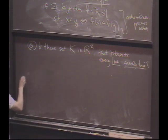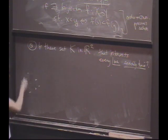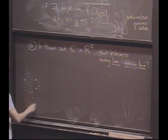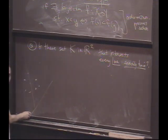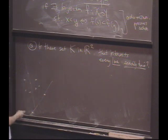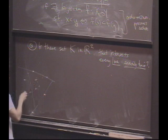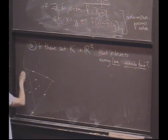I mean, for instance, here's a set. Does this intersect every line exactly twice? No. Right? Okay, well, does this intersect every line exactly twice? No. Okay, well, I'll just throw more points on. Does this intersect every line exactly twice? No.